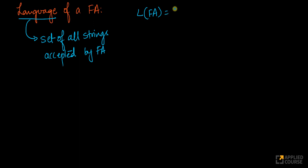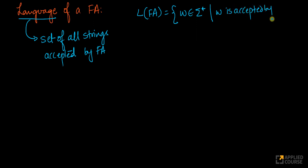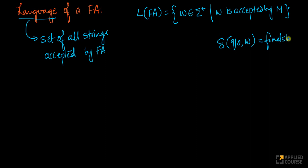Formally, this is all the words w that belong to sigma star, such that w is accepted by your finite automaton machine M. In other words, if you start with the initial state q0 and apply each of the symbols in w, and this takes you to a final state, that's what it means by accepting.